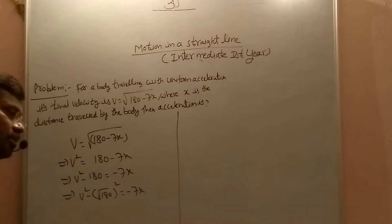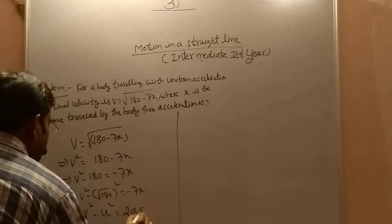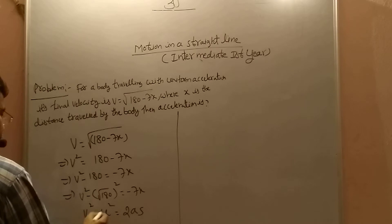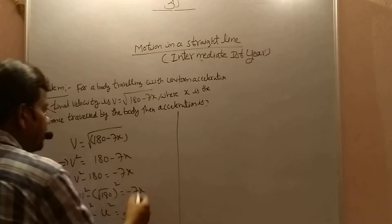Now I am comparing with this third kinematic equation: v square minus u square equals to 2as. So u equals to square root of 180 and 2a equals to minus 7. This is the displacement.